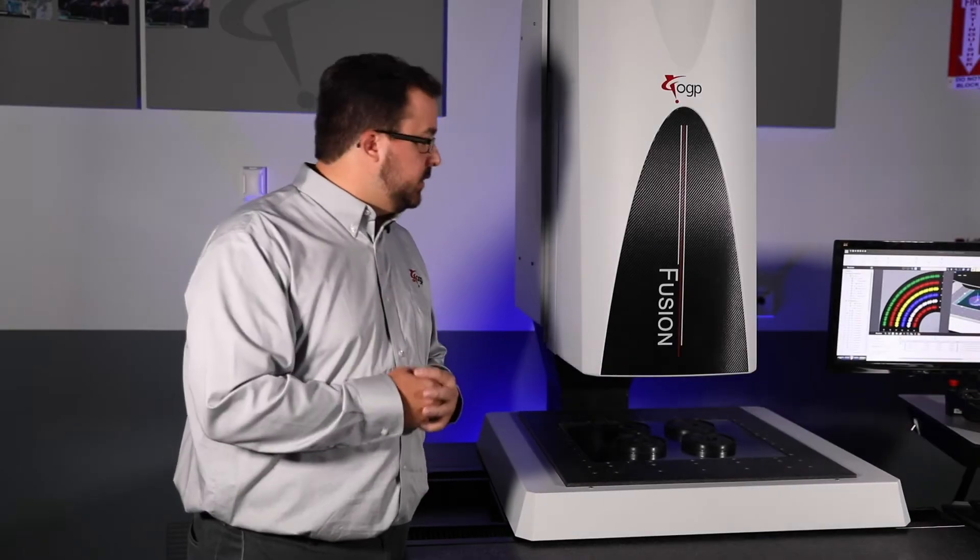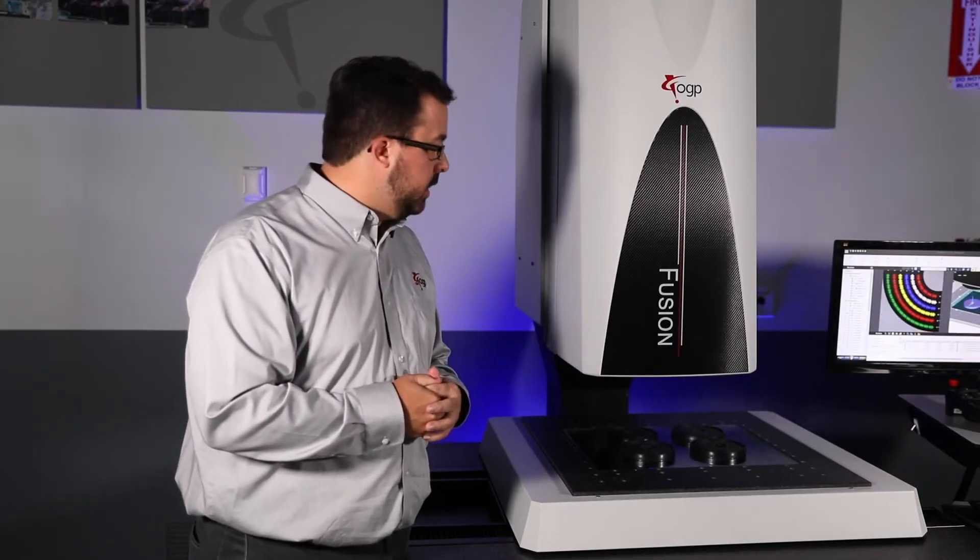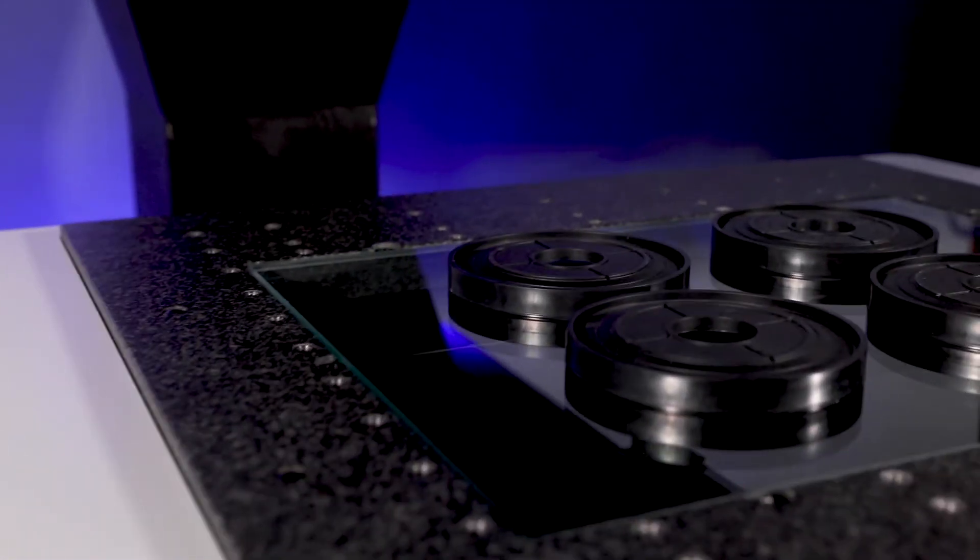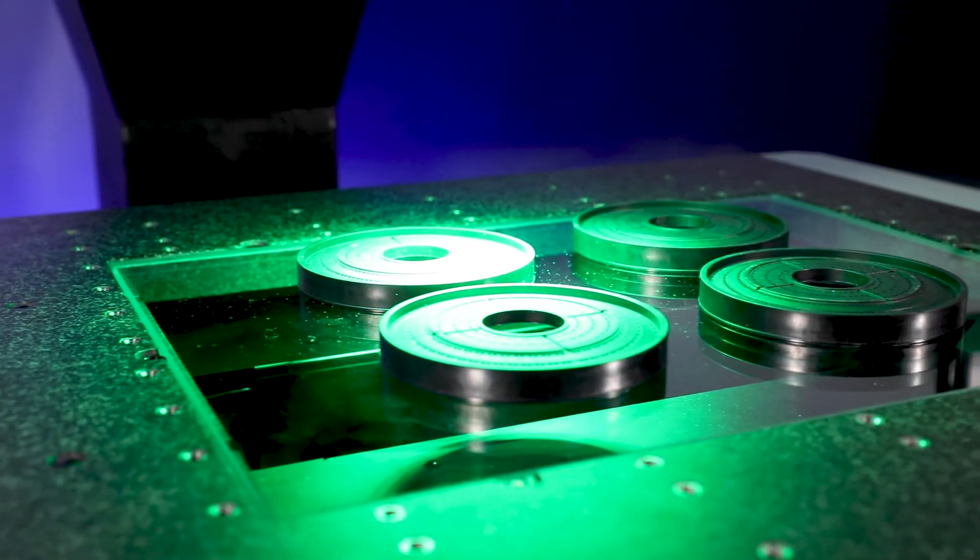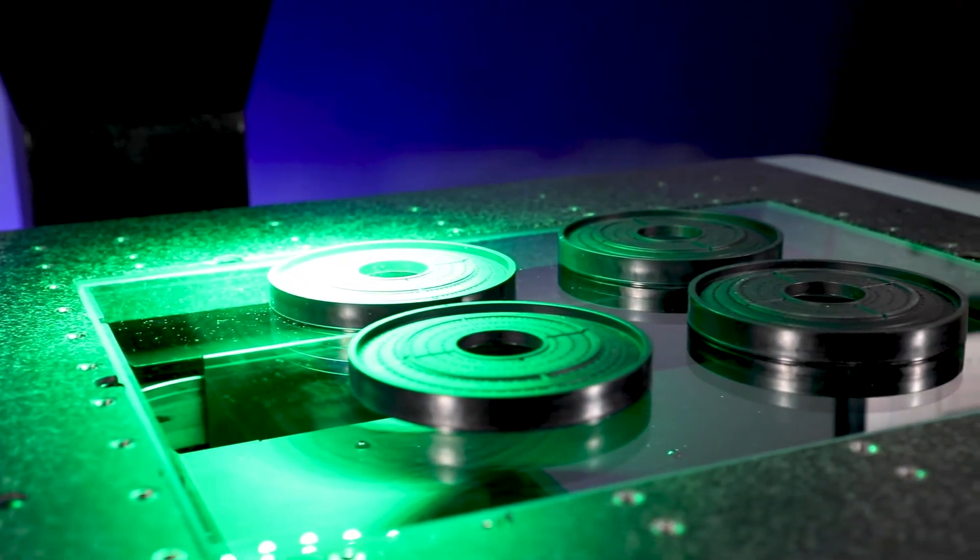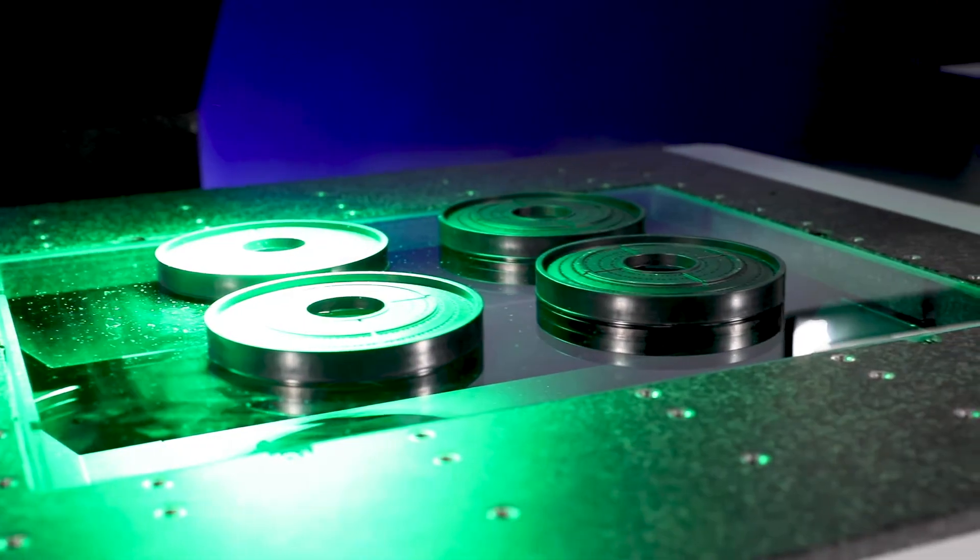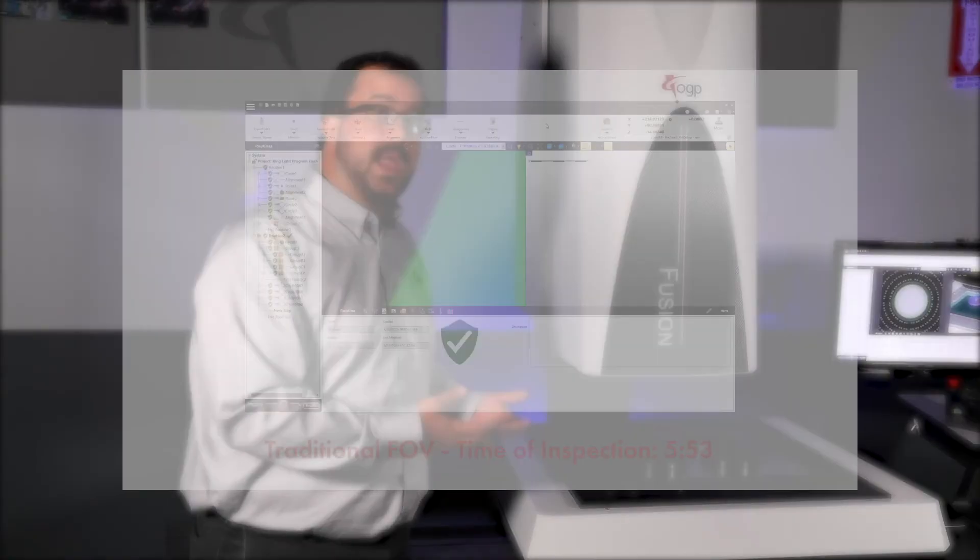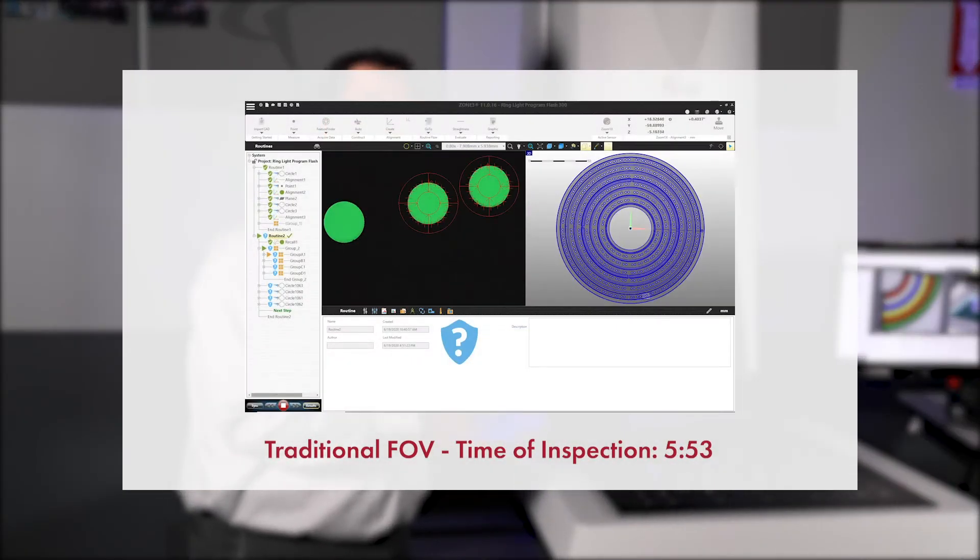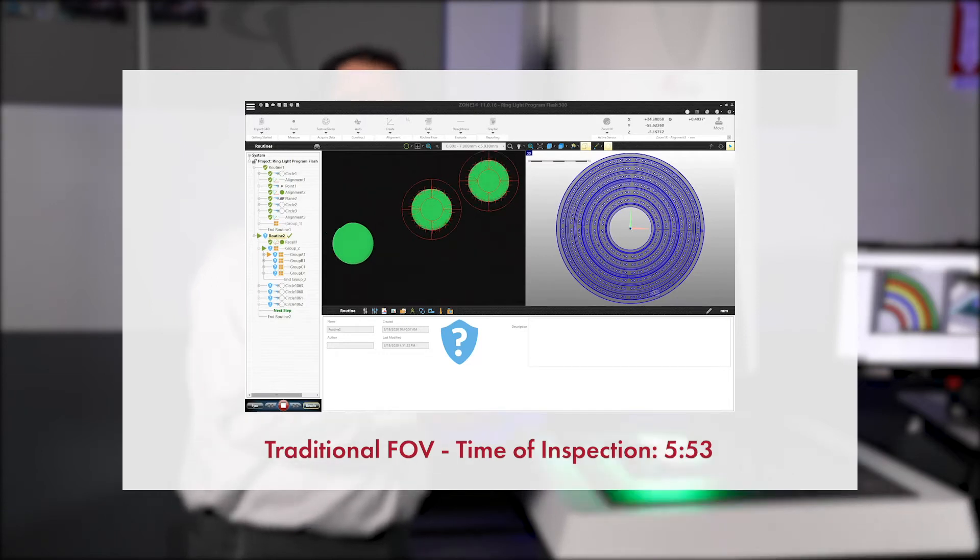Let's take a look together at a high-throughput part that we're inspecting on the Fusion today. This part requires a lot of hole inspections with high throughput. These holes are at different z-heights and different levels, but because of the large depth of field and the telecentricity of the Fusion optics, we're able to inspect all these holes in one snapshot.